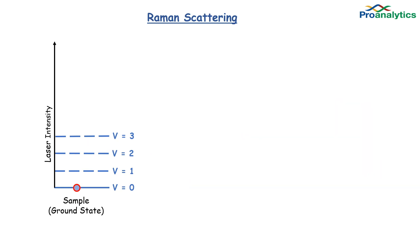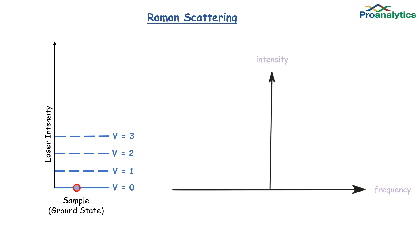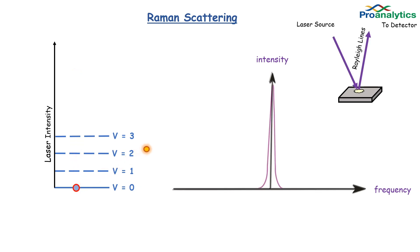There are three Raman scattering profiles when samples are struck by laser energy. Here we have a graph of laser intensity versus frequency or vibrational energy. The photon strikes the sample, vibrates in the excited state before releasing all the energy in its ground state. Vi is the incidental laser light and Vs is the Raman scattering profile. Here, Vs is equal to Vi. This is known as Rayleigh scattering, where the amount of energy going in equals the amount of energy that has been emitted.